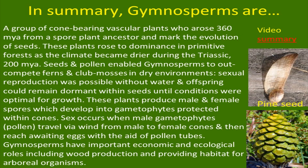In summary, gymnosperms are a group of cone-bearing vascular plants who arose 360 million years ago from a spore plant ancestor, and mark the evolution of seeds. These plants rose to dominance in primitive forests as the climate became drier during the Triassic, 200 million years ago. Seeds and pollen enabled gymnosperms to out-compete ferns and club mosses in dry environments. Sexual reproduction was possible without water, and offspring could remain dormant within seeds until conditions were optimal for growth.